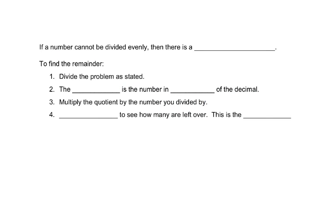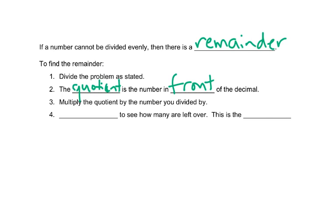If a number cannot be divided evenly, then there is a remainder. To find the remainder, we divide the problem as written. The quotient — the whole number answer — is the number in front of the decimal. If we multiply that quotient by the number we divided by, and then subtract to see how much is left over, that leftover amount is the remainder.